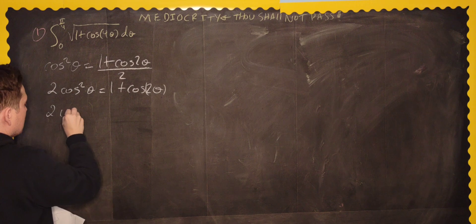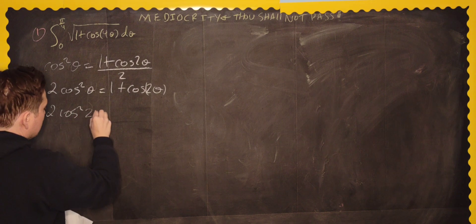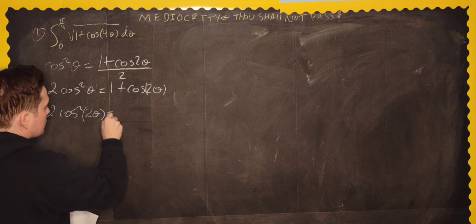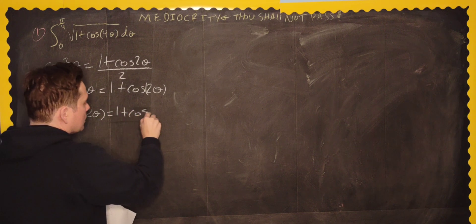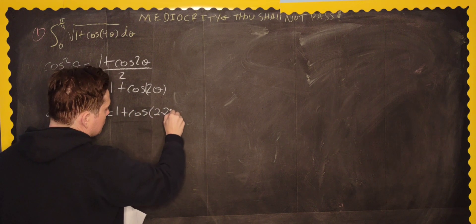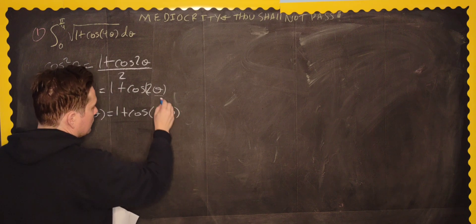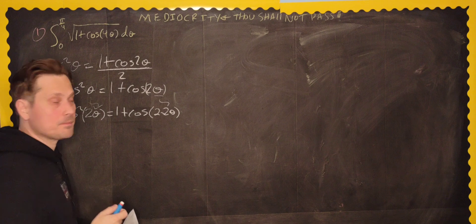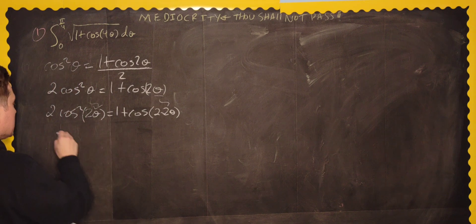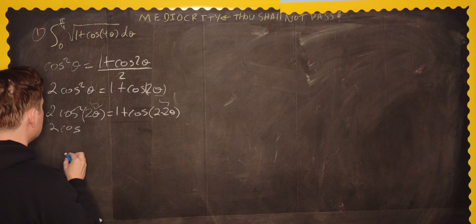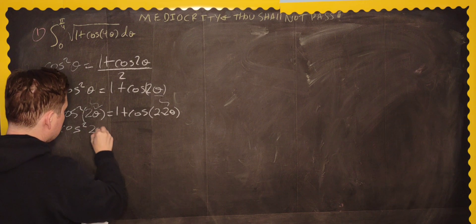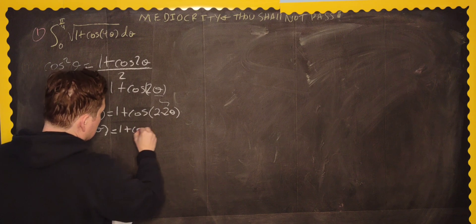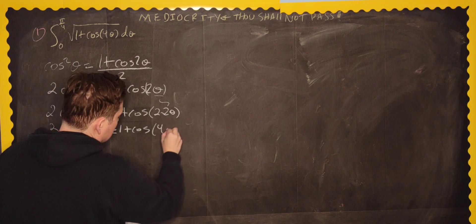So I'm going to say 2 and then cosine of 2 theta. So 2 cosine squared of 2 theta is equivalent to 1 plus cosine and 2 times 2 theta. So I'm replacing theta here with 2 theta. And same thing over here. Theta with 2 theta. That's going to give us the equivalent then that says that 2 cosine squared of 2 theta is equivalent to 1 plus cosine of 4 theta.